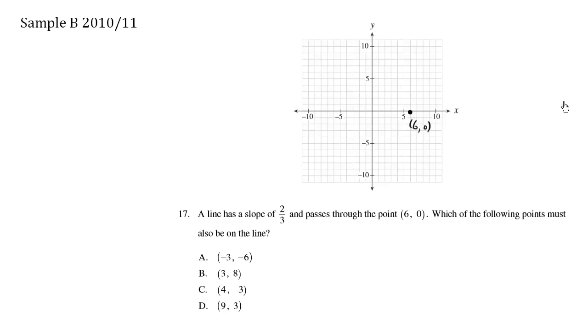Now let me plot these other points. We have negative three comma negative six, negative three here, negative six over here. This is one point.